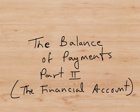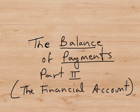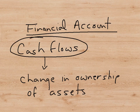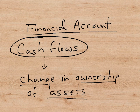This presentation is the second part of our look at the balance of payments, and this time we're going to look at another section of the balance of payments called the financial account, which is the other important section. The financial account includes cash flows, all of which represent some kind of change in the ownership of assets between an economy and people outside the economy.